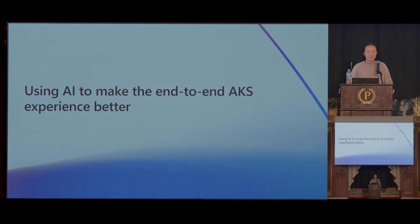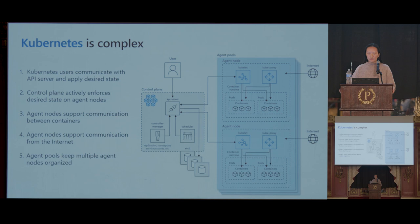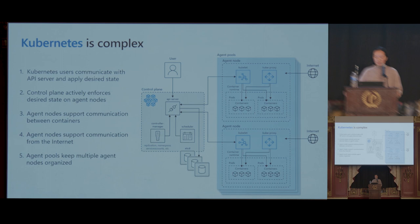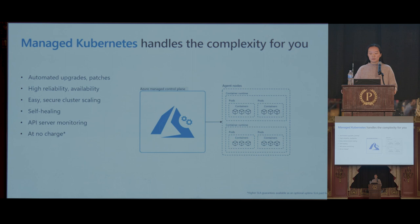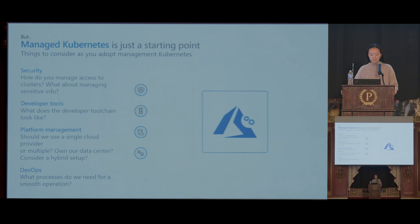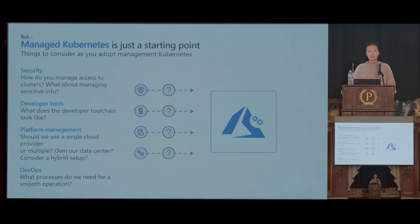Thank you Justin. Next I'll be discussing how AI can help to make the end-to-end AKS experience better. We're all aware that Kubernetes can be complex. There are several Kubernetes components that work together to provide an interface that allows you to define and manage your applications, giving you a high degree of flexibility and reliability — but managing these components can be challenging. Managed Kubernetes services such as AKS can handle some of the complexity for you, from multi-layer security best practices to tooling to help improve developer productivity.